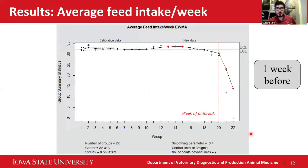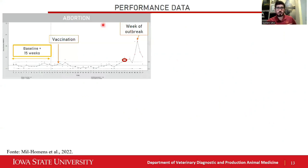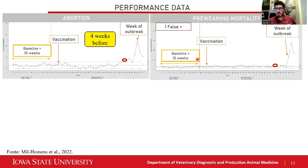Similarly, we also got from the electronic sow feeding system the average feeding intake — the weekly average feeding intake of the sows. We still need to do a bit more work on this, but we can see it was able to detect one week before the week of the outbreak. For abortions, we have been seeing similar results compared to before — up to four weeks before the week the farm reported the outbreak. For perinatal mortality, similar results as well. We were able to detect a little bit early, but we did have a false alarm. In this case, we are able to detect four weeks before as well.